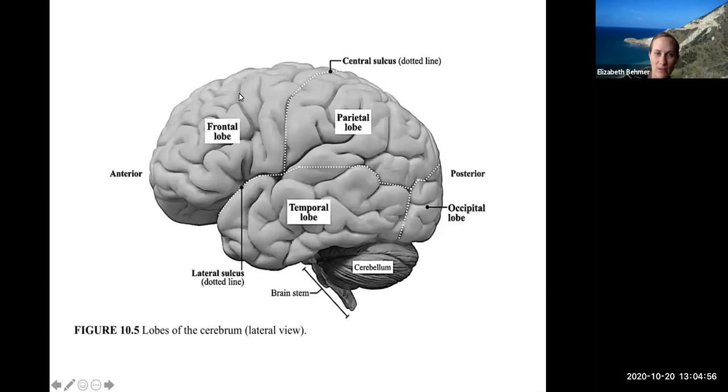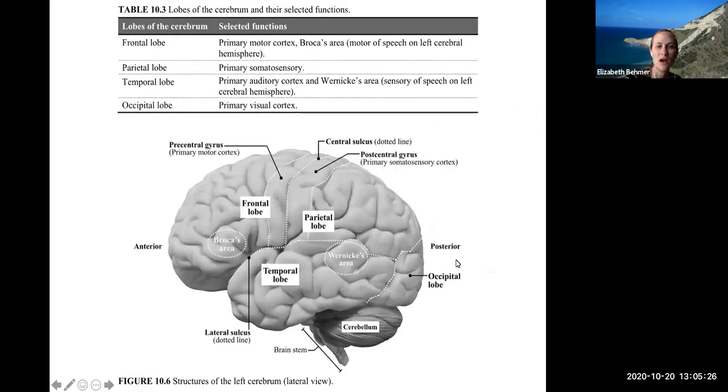Here are the lobes of the cerebrum, and they're all named for the skull bone that they'll sit underneath. So you can see here the frontal lobe, parietal lobe, temporal lobe, and occipital lobe, with the cerebellum as its own separate portion in the inferior posterior side of the brain. The brain stem comes off the bottom, and then you can see the sulcuses, or sulci for plural, dividing the lobes from each other. Within these lobes are a Broca area and a Wernicke area. Here's the precentral gyrus, which will be your motor cortex. The postcentral gyrus is your sensory cortex, and a gyrus is any brain fold of the cerebrum.